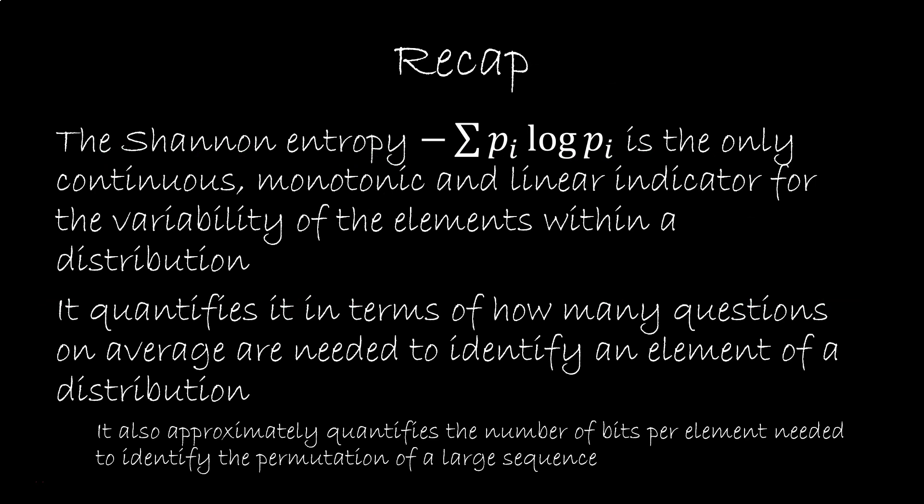So far we have seen that the Shannon entropy minus Σp log p is the only continuous monotonic and linear indicator of variability of the elements within a distribution, how different the elements are from each other. It quantifies the number of questions one needs on average to identify an element within the distribution. It also approximately quantifies the number of bits per element needed to identify the permutation of a large sequence with a known distribution.